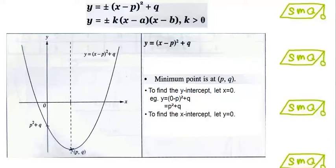Similarly, to find the x-intercept, we simply let y equal to 0 and solve for x. Once we have found the minimum point, y-intercept and the x-intercept, we can sketch the graph by joining the points together to form this graph.